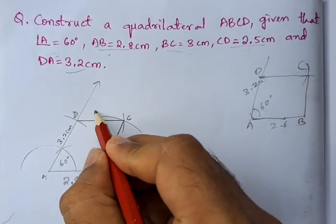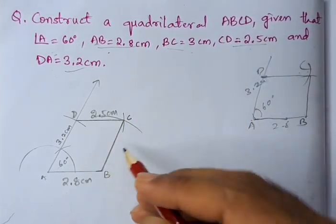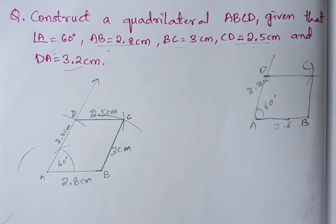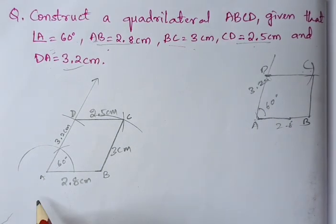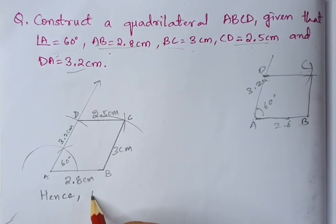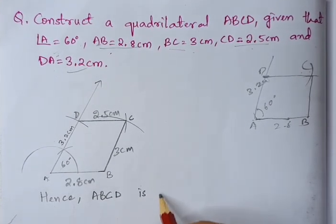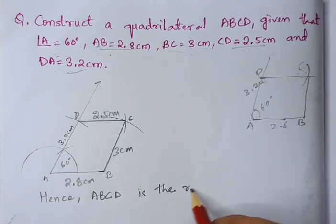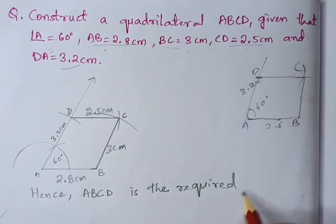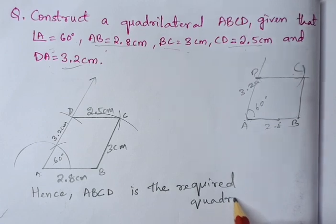CD is 2.5 centimeters and BC is 3 centimeters. This is our required quadrilateral. Hence, ABCD is the required quadrilateral.